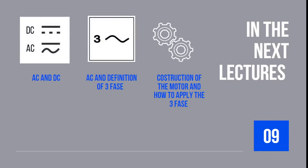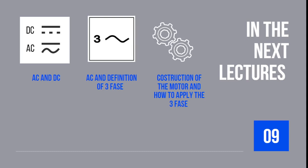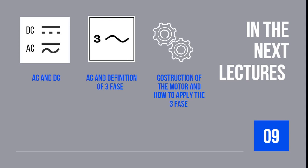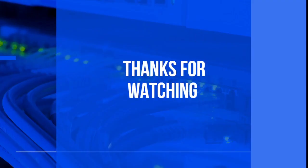In the next lectures, we are going to explain AC and DC — alternating current and direct current — as well as the definition of three-phase. Then we will explain the construction of the motor and how to apply three-phase power to the motor. Thanks for watching — that's it for this lecture, and I hope to see you in the next one.